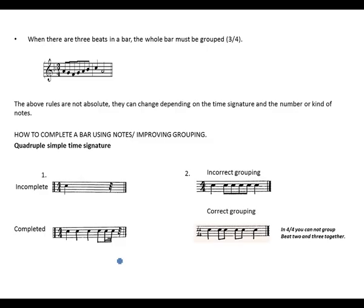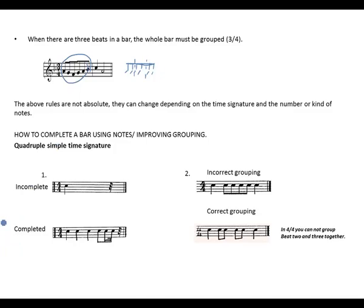When there are 3 beats in a bar, the whole bar may be grouped together — this is also an exception, since all notes have equal value, but it's not always the case. In a 3/4 bar, beat 1, beat 2, and beat 3 can each be separated, but an exception can be made where all beats are grouped together. The above rules are not absolute — they can change depending on the time signature or the kind of notes used.